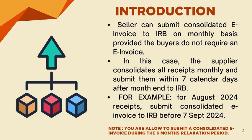In this case, the supplier consolidates all receipts monthly and submits them within 7 calendar days after month end to IRB. For example, for August 2024 receipts, submit the consolidated e-invoice to IRB before the 7th of September 2024.